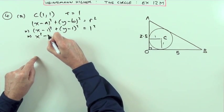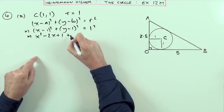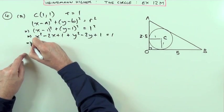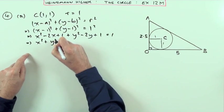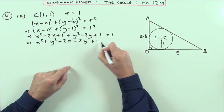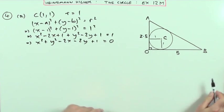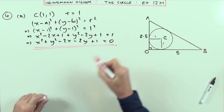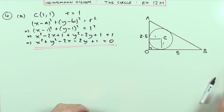Multiply the brackets: square the first, twice the product, square the last. Bring it all together with the squared terms first, then the x and y terms, and finally the numbers. There's only one left, so all equals zero. And there it is, there's the equation of that circle.